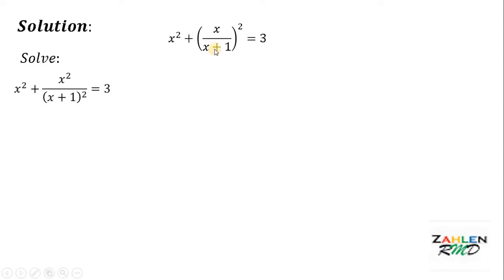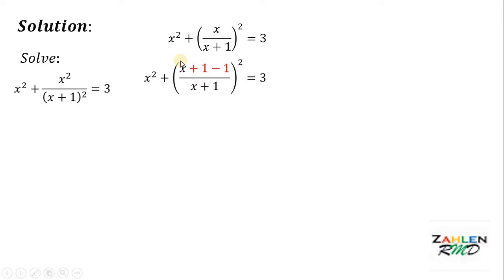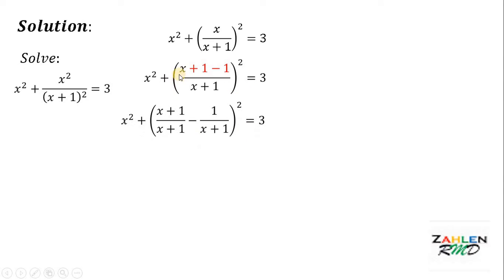Next, what we're going to do is add 1 to the numerator and subtract 1. The purpose is to have x plus 1 on the numerator and x plus 1 on the denominator, so that we can separate this fraction. So x plus 1 minus 1 all over x plus 1 can be written as x plus 1 all over x plus 1 minus 1 over x plus 1, quantity squared.